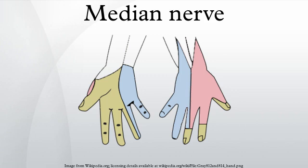The median nerve is the only nerve that passes through the carpal tunnel. Carpal tunnel syndrome is the disability that results from the median nerve being pressed in the carpal tunnel structure.